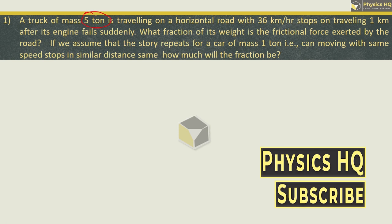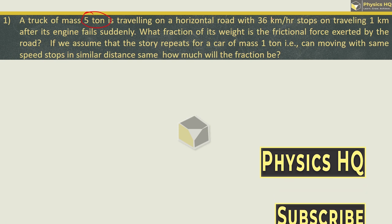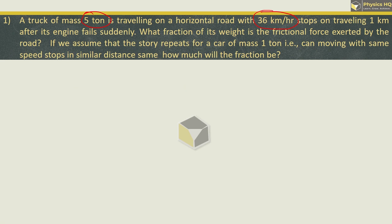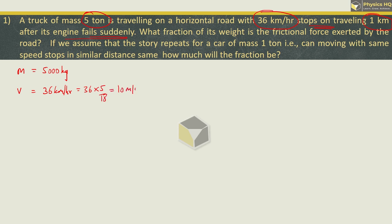A truck of mass 5 tons is traveling on a horizontal road with velocity 36 km per hour and it stops after traveling 1 km when its engine fails suddenly. Here mass is 5 tons, which is 5000 kg. Speed is 36 km per hour, which we convert to 10 meter per second — this is the initial speed U. The vehicle stops after traveling 1 km, so distance S is 1000 meters.